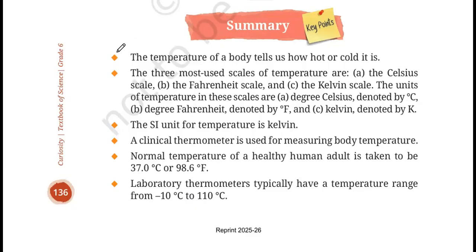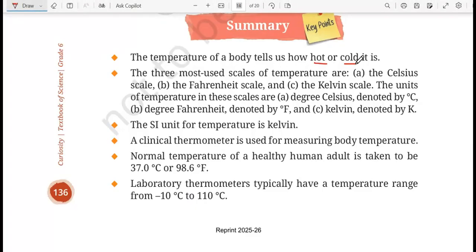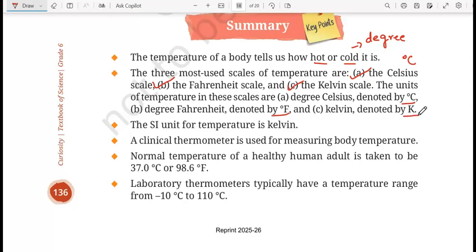What we learnt in this chapter: the temperature of a body tells us how hot or how cold a body is — that is, it tells us about the degree of hotness or coldness of a body. The three most used scales of temperature are the Celsius scale, the Fahrenheit scale, and the Kelvin scale. For the Celsius scale we say degree Celsius, for Fahrenheit we say degree Fahrenheit, and for Kelvin it is denoted by the alphabet K. The SI unit for temperature is Kelvin, denoted by the symbol capital K.